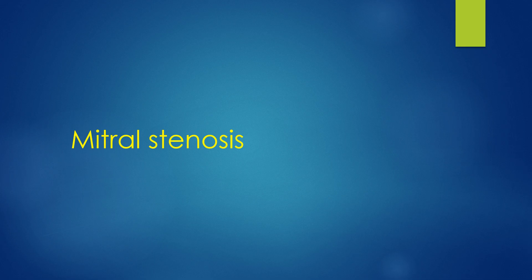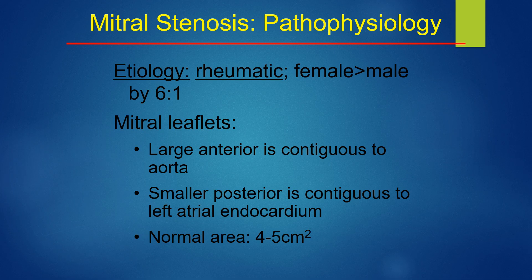Mitral stenosis: pathophysiology and etiology. It is caused by rheumatic disease, affecting females more than males by 6 to 1. The mitral leaflet has a large anterior leaflet contiguous to the aorta and a smaller posterior leaflet contiguous to the left atrial endocardium. The normal mitral valve area is 4 to 5 cm².